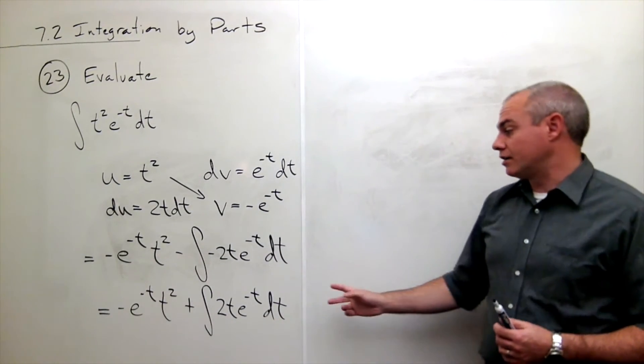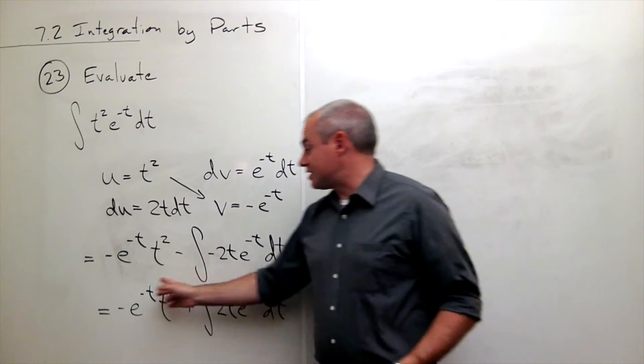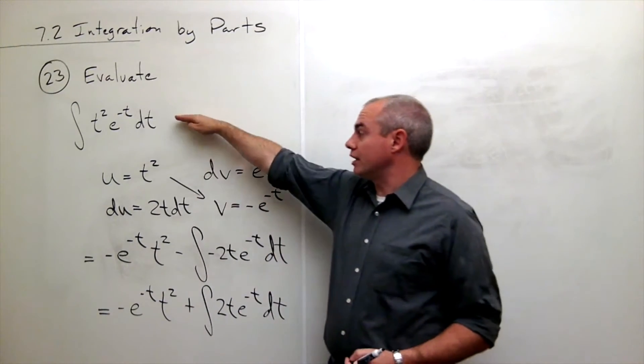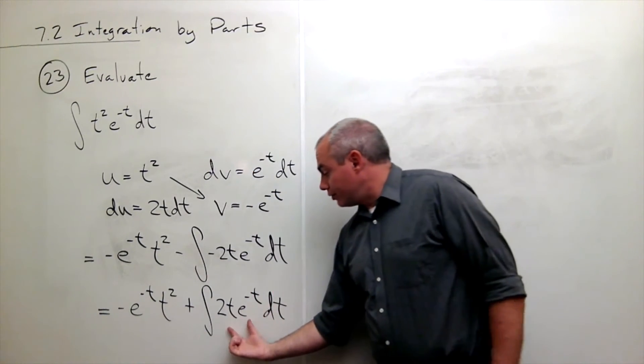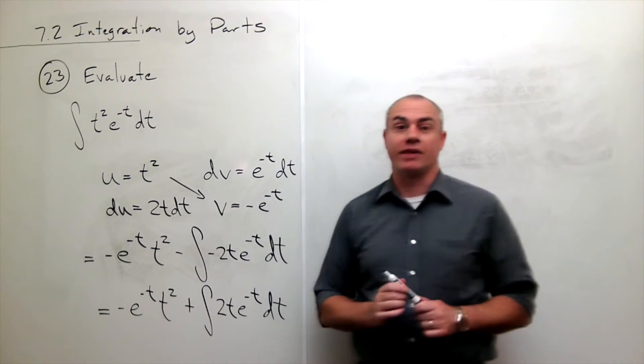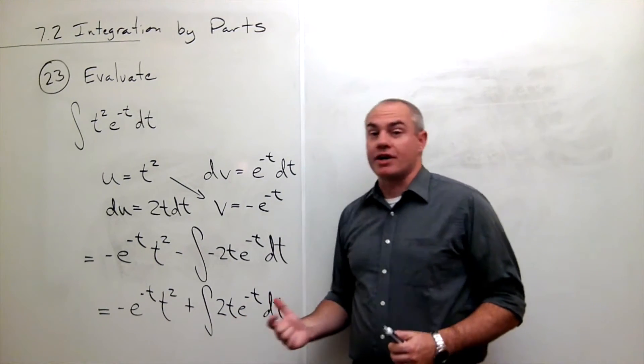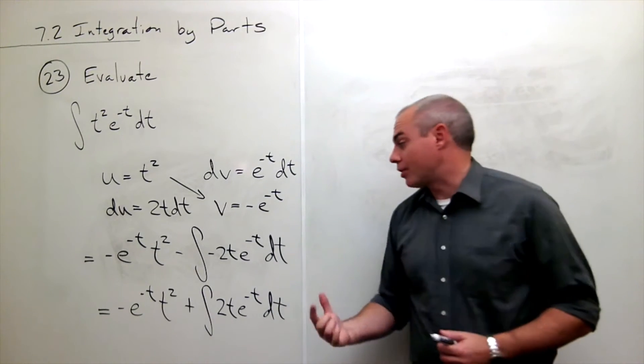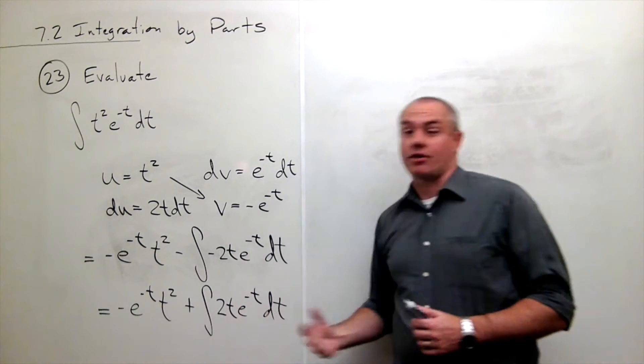So what I've done here is I have simplified my original integral. Now I have a new integral but this guy I also don't know the anti-derivative of without using integration by parts. So we'll need to use integration by parts again on this integral.